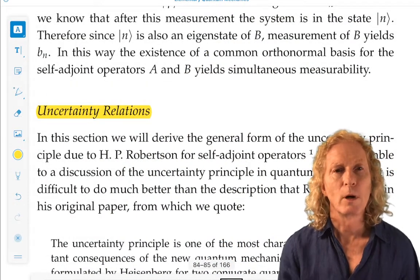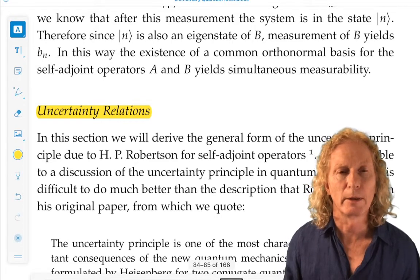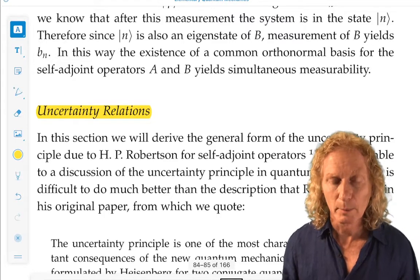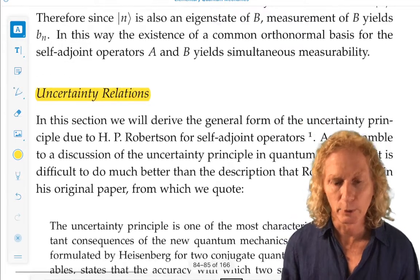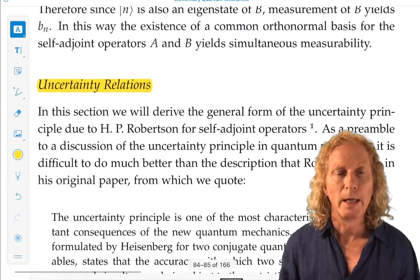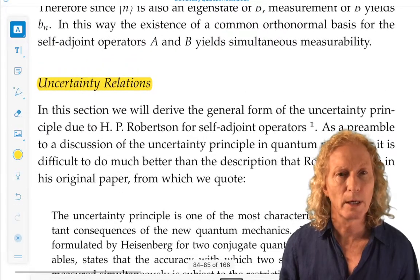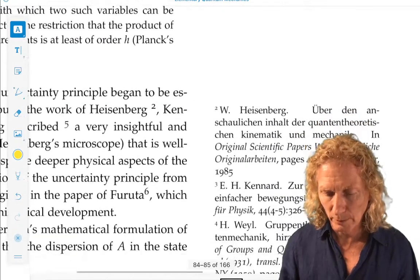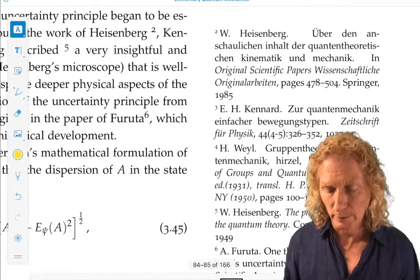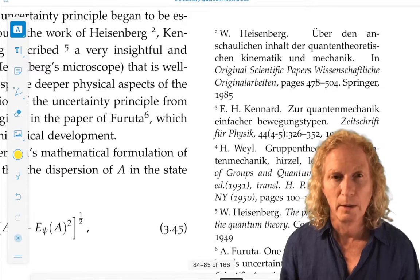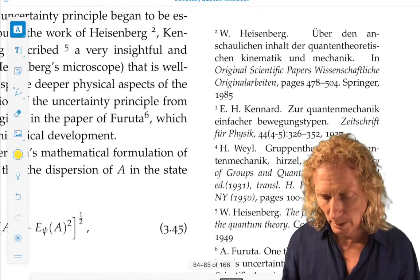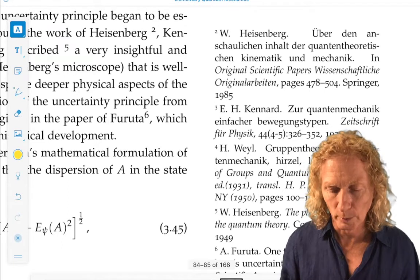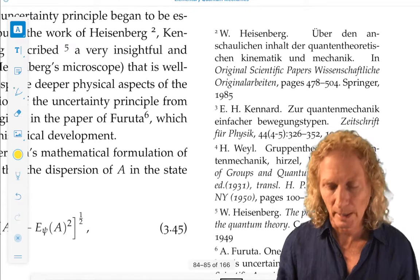This is probably one of the areas of Quantum Mechanics that you've heard something about, the so-called Heisenberg uncertainty principle. But many people, in addition to Heisenberg, have contributed to this topic, and there are a number of different types of uncertainty principles. Over in the margin, I've included a number of the original references. The names of, in addition to Heisenberg, Kennard, Hermann Weill, and Robertson, whose approach we will follow, are associated with this idea.